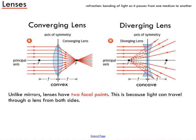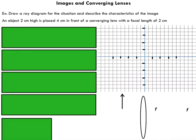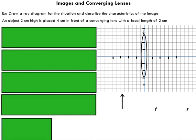In this video, I'm going to show you a couple of problems involving converging and diverging lenses, and how to predict what images are going to look like when rays of light are shot towards these lenses. The first example: draw a ray diagram for the situation and describe the characteristics of the image. I've built a converging lens and placed it on a grid, which is useful for measurements — you can draw these things to scale.